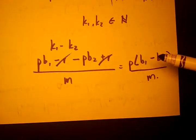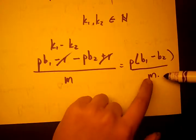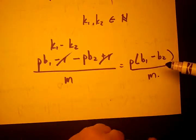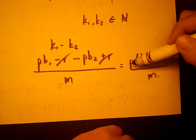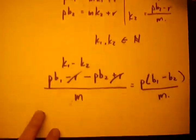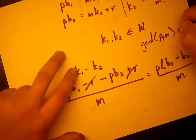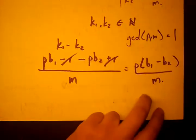If this is a natural number, that means one of these terms must divide M. Or, I mean, M must divide one of these terms. We know that M cannot divide P, because GCD of P and M equals 1. So they have no common factors.